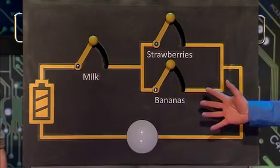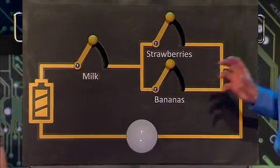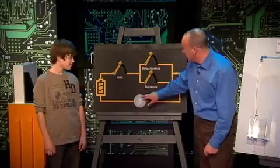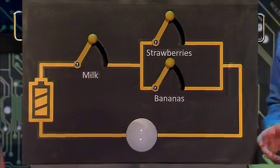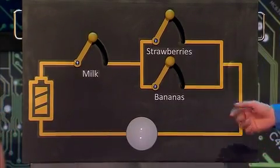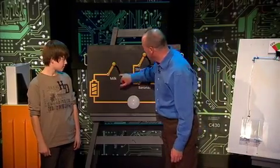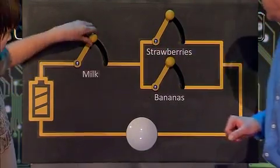And to understand what they're all doing we've got a simple example. So what we're going to do here is make a milkshake, and if we succeed this light will come on. Now to make a milkshake obviously we need milk, so what I'd like you to do is close this switch by moving that lever down.